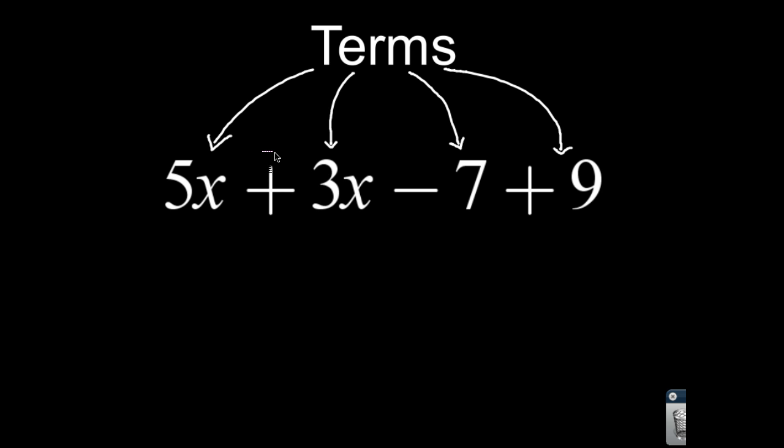Now, this is minus or subtracting 7 — we're taking away a positive 7, which means that 7 is going down. So essentially we can say that this is actually negative 7, because that 7 is going down. And then finally, that last one is adding a positive 9, so that's going to be going up. So we need to combine parts that are alike. 5x and 3x are both going to be variable terms — these are variable terms.